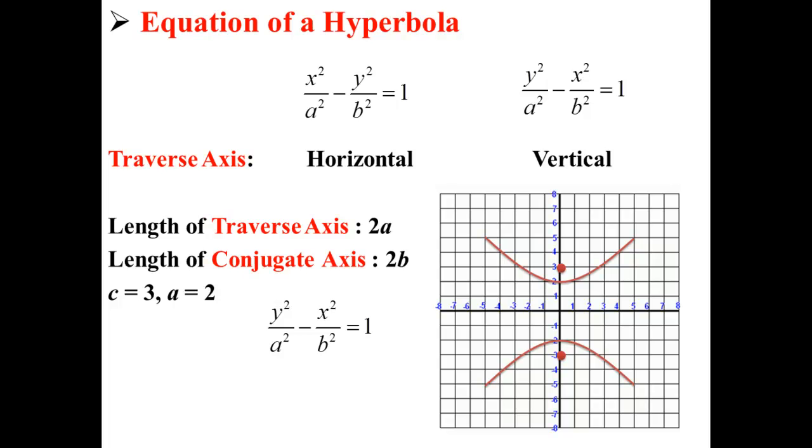To find the equation of our hyperbola, which has a vertical traverse axis, we need both a and b. We already have a, a is 2, so we take a squared to get 4, but we don't have b.